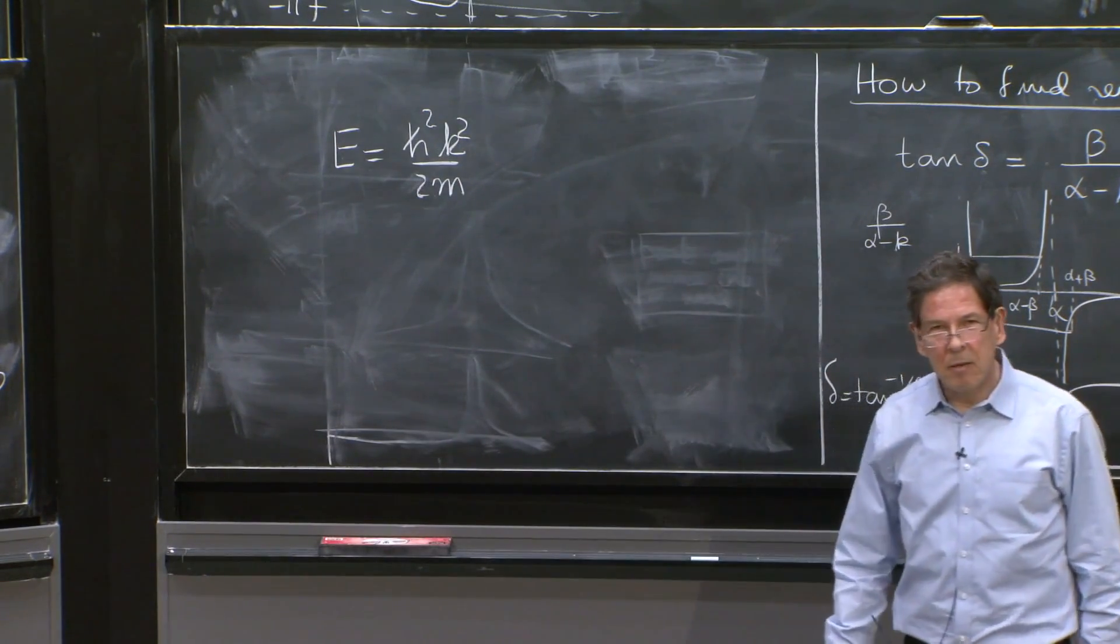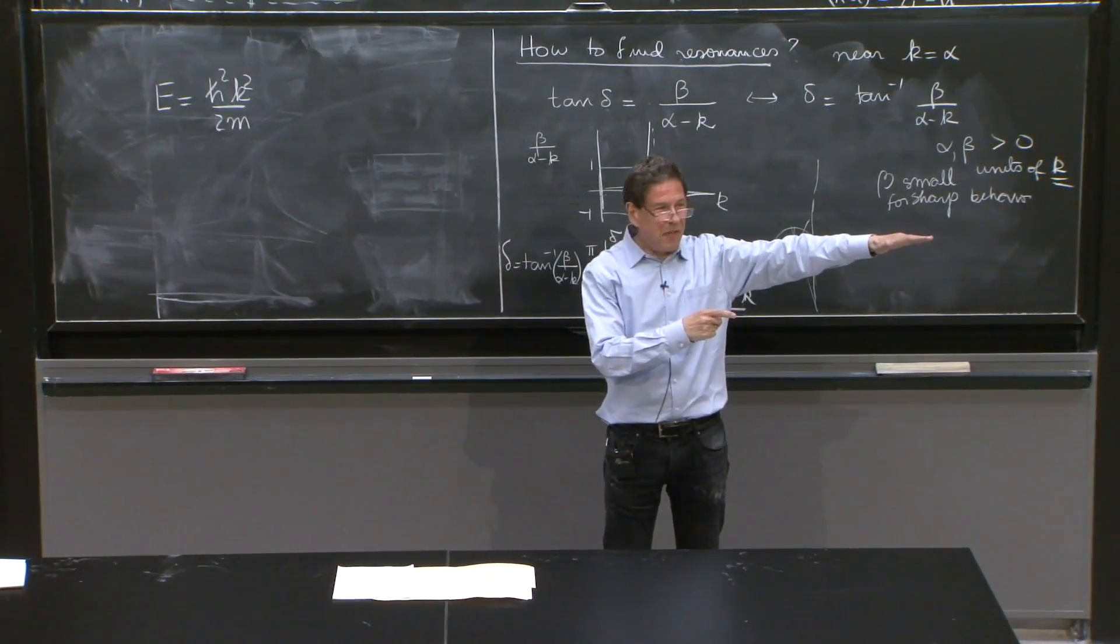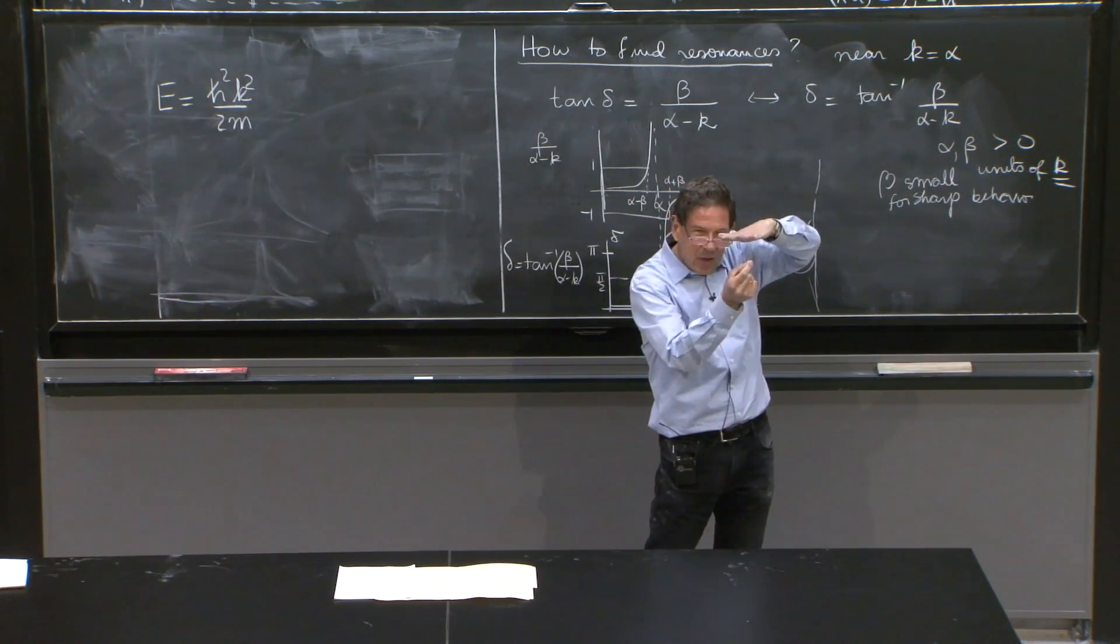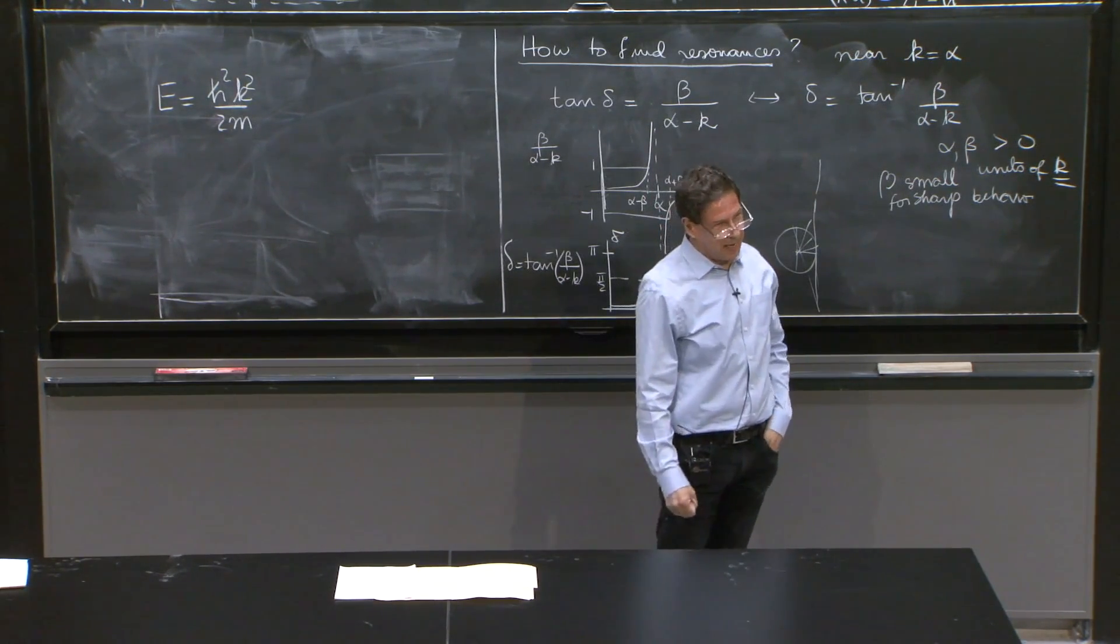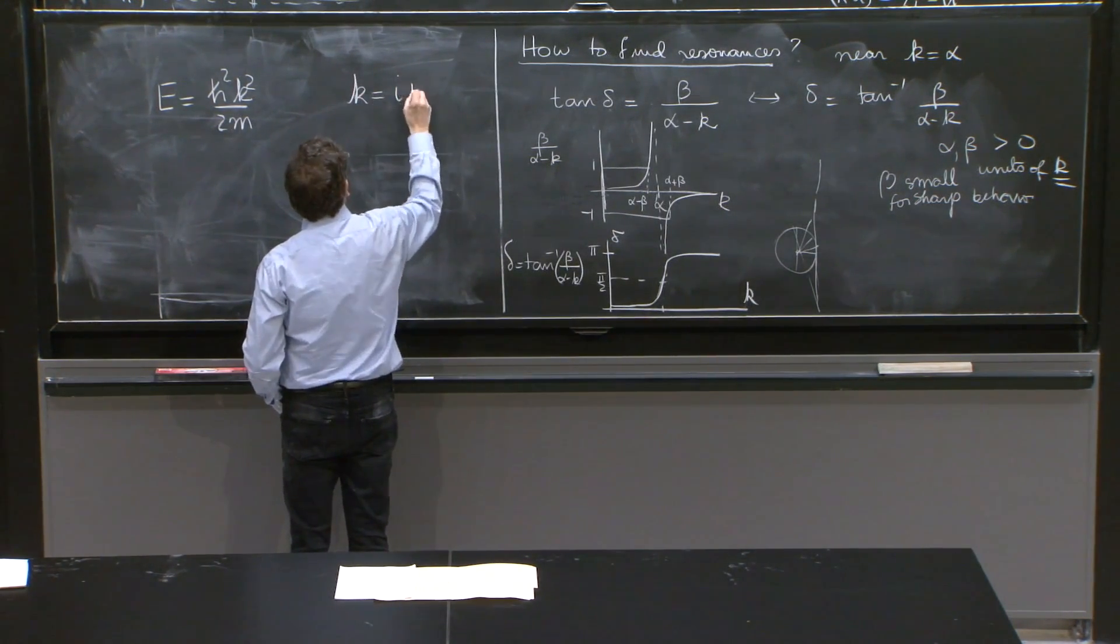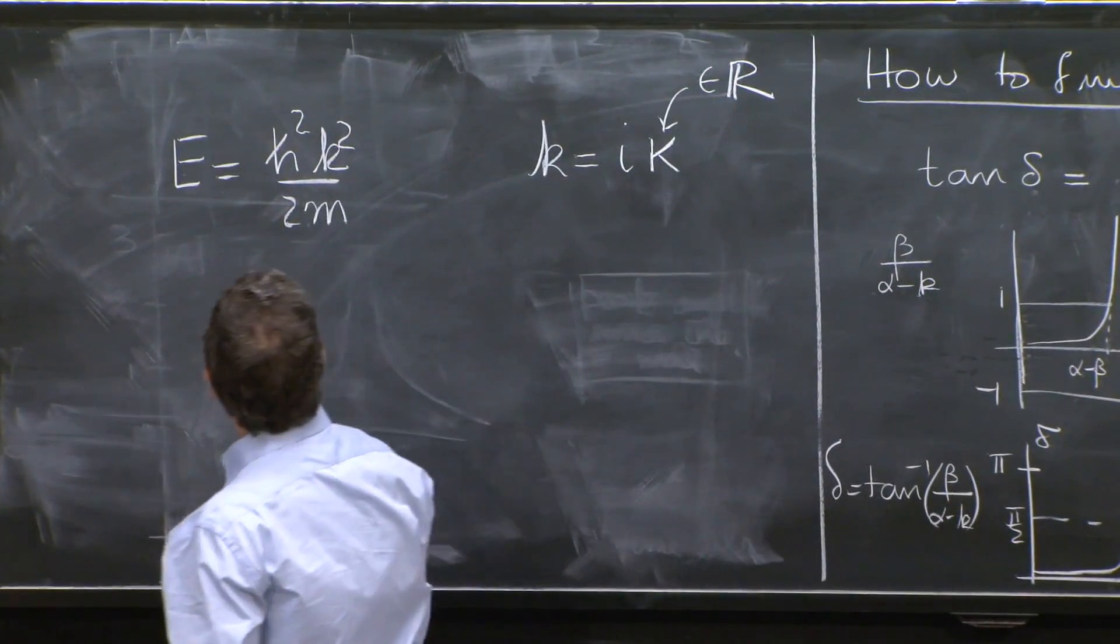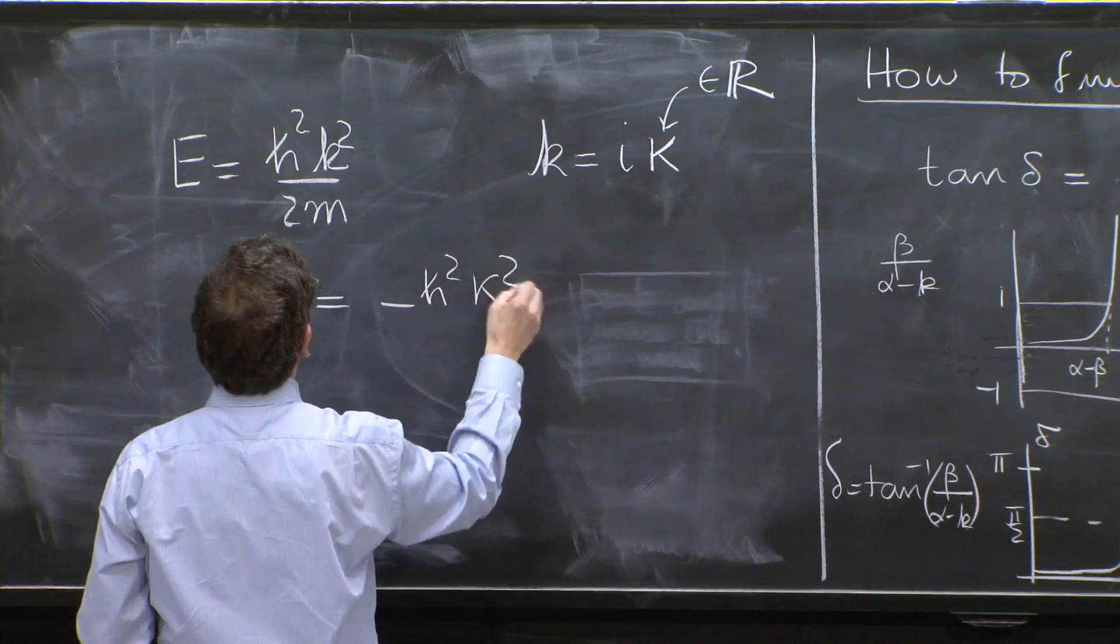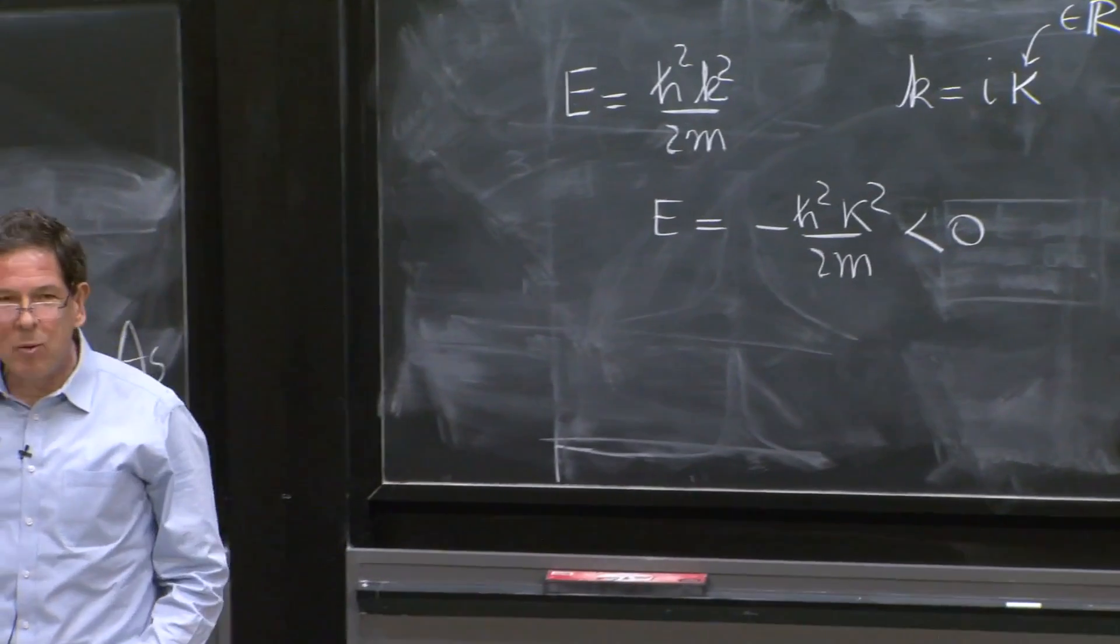But now you can say, look, actually, you have E is equal to h squared k squared over 2m. And OK, we have real k's. This is the physical scattering solutions. Complex k's, those are resonances. How about imaginary k's? If k is equal to i kappa, if kappa belonging to the real numbers, then the energy becomes minus h squared kappa squared over 2m. And it's less than 0. And it could represent bound states.